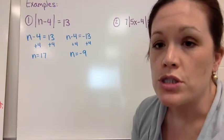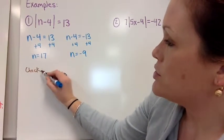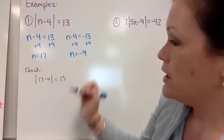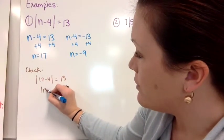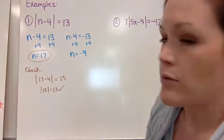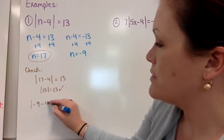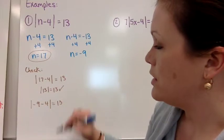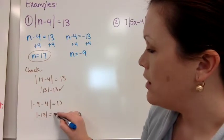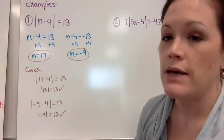Then we want to check our solution to make sure it makes good sense. Plug 17 back into the original equation: the absolute value of 17 minus four equals the absolute value of 13, which does equal 13. So that solution checks out. Now check negative nine: the absolute value of negative nine minus four is the absolute value of negative 13, which equals 13. That's also true. So we have two solutions: n equals 17 and negative nine.